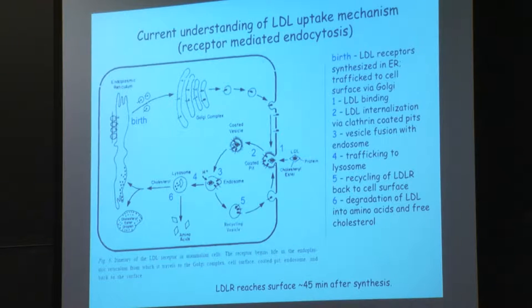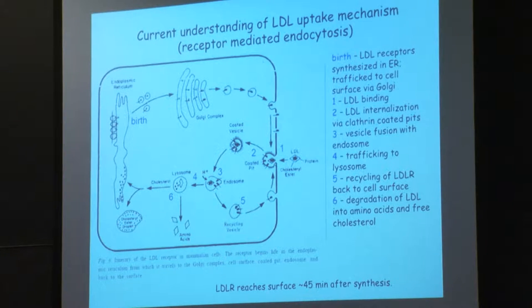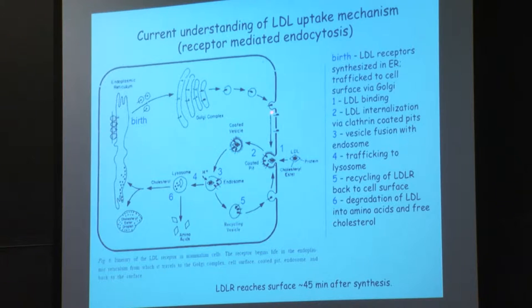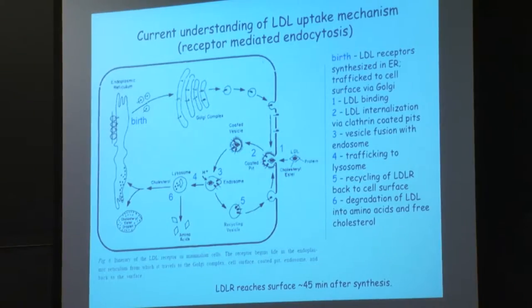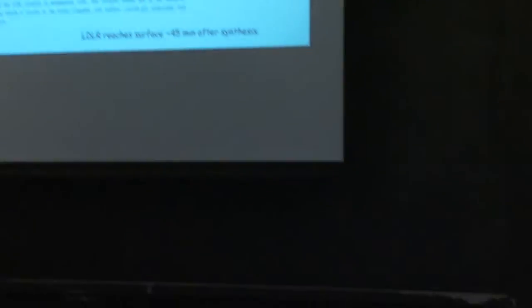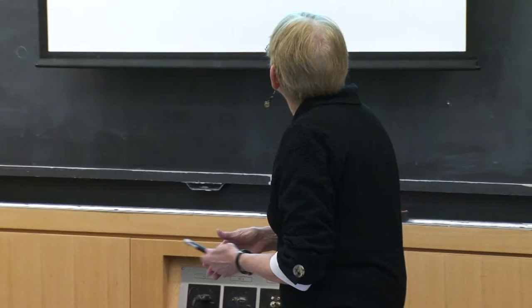The process of getting the LDL receptor to the surface is done in the rough endoplasmic reticulum. Because it's a membrane protein, it's transferred by little coated vesicles, which then deliver the receptor to the surface. This is a very complicated process. In fact, mutations responsible for heart attacks occur at every step in this process — it's not just the LDL receptor. We'll see that in class next time.